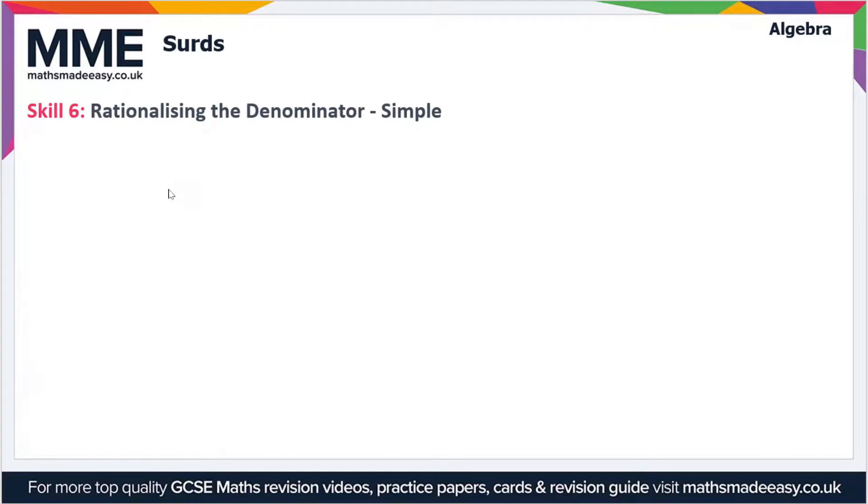But here we're going to look at a skill called Rationalising the Denominator. Now there's two types of questions you'll see. One's fairly straightforward, the other one's slightly more difficult.